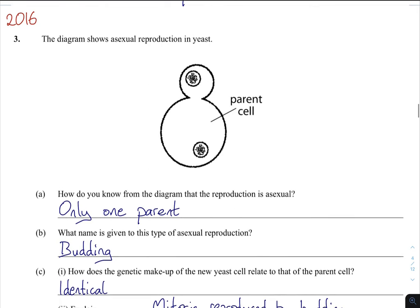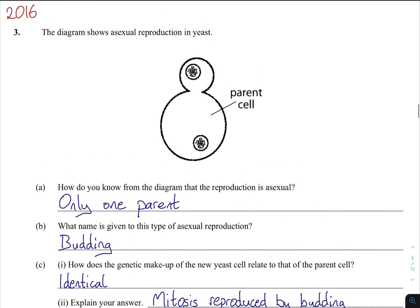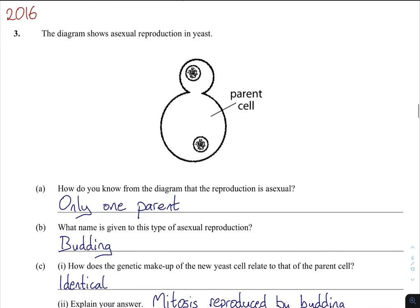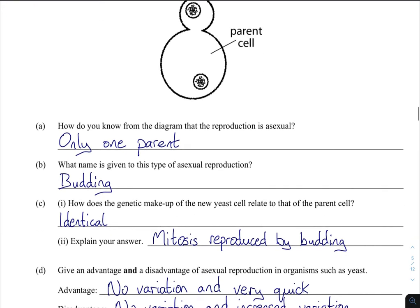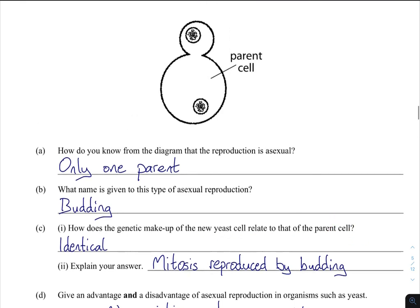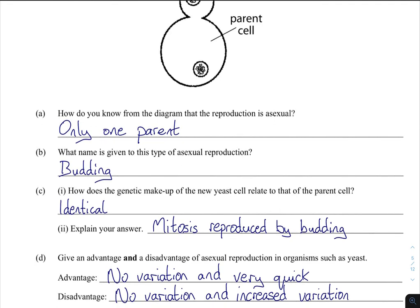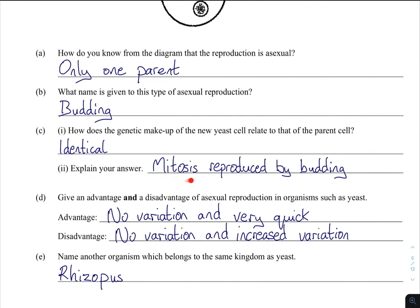So 2016 — there are two sections: the Rhizopus section and then the yeast. This hasn't come up for a while, so anyone sitting the 2021 paper should definitely be studying this. First off, how do we know from the diagram that reproduction is asexual? Yeast is asexual — there's only one parent present. The name of this type of reproduction is called budding. How does the genetic makeup of the new yeast relate to the parent? It's going to be identical.